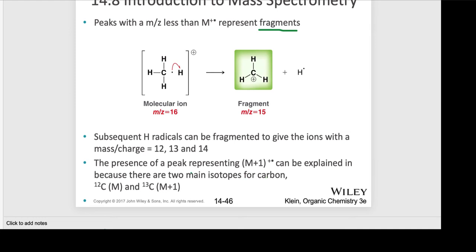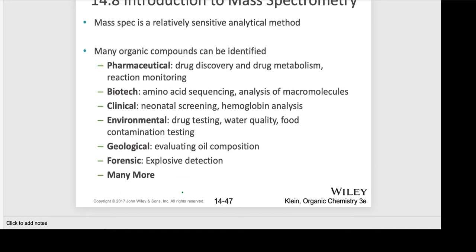The presence of a peak at M plus 1 can be explained because we have two main isotopes for carbon. There is C-12, shown here as M, and then there is C-13, which we refer to as M plus 1.